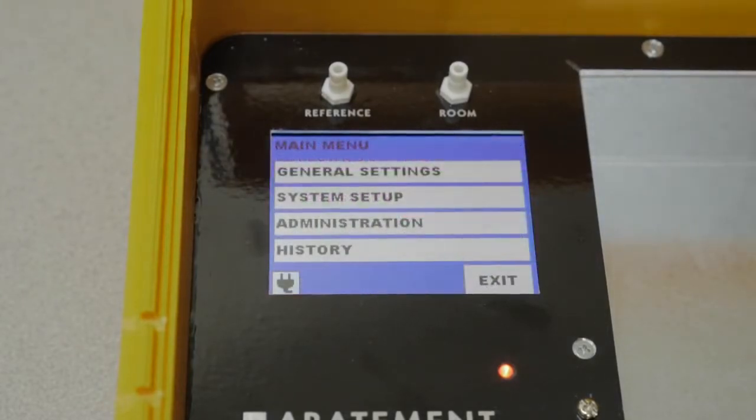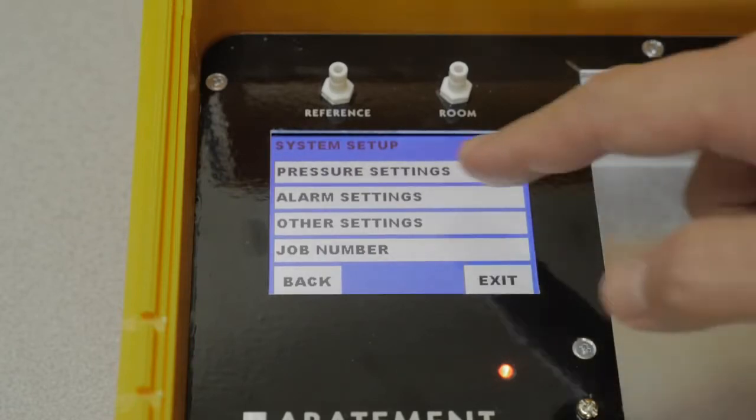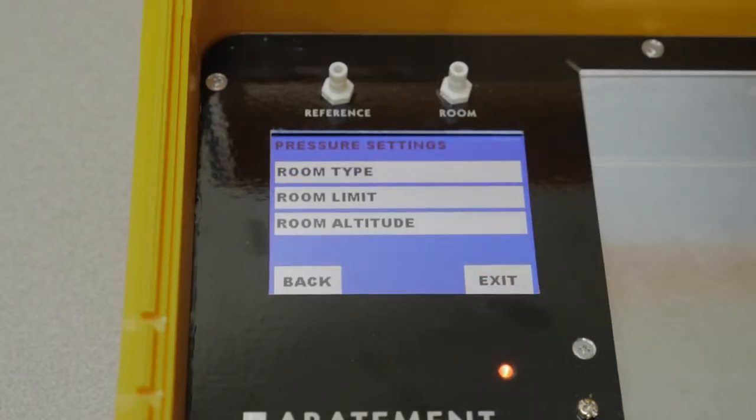The system setup menu provides access to all the options for configuring the way the pressure monitor functions. The pressure settings menu allows the operator to change the settings for measuring the differential pressure.